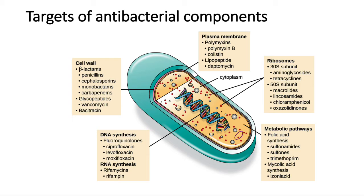We humans need to take folic acid — we cannot make it ourselves — but bacteria can make it, and the sulfa drugs interfere in the synthesis of this acid. Also, particularly for mycobacteria, there is the synthesis of mycolic acid, which is necessary for the acid-fast cell wall. Last but not least, there are also antibiotics targeting the synthesis of nucleic acids — DNA or RNA synthesis.